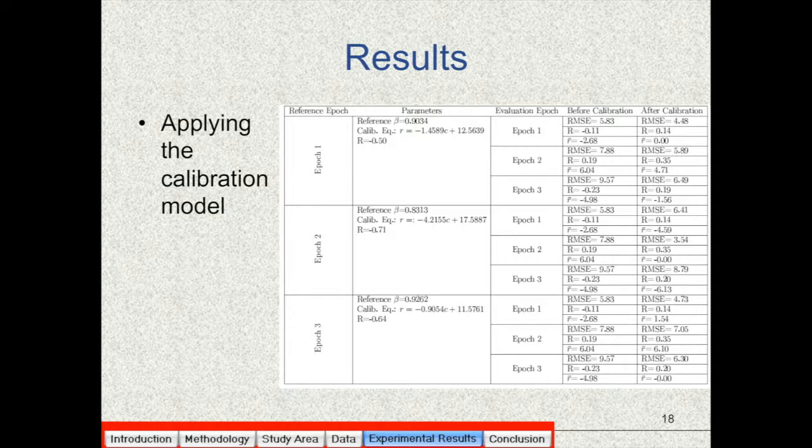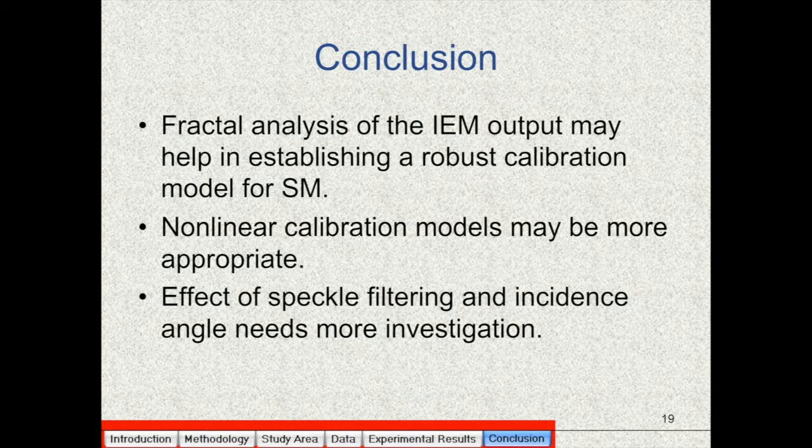So as a conclusion I can say that the multi-fractal analysis may be used for improving the estimation of soil moisture by the IEM by establishing a robust calibration model. However, a more complex model may be needed for this purpose than the simple linear model that we have used. Also, as the speckle filtering affects the spatial variability of the soil moisture coming from the IEM, the effect of speckle filtering and also the effect of incidence angle needs to be more investigated.